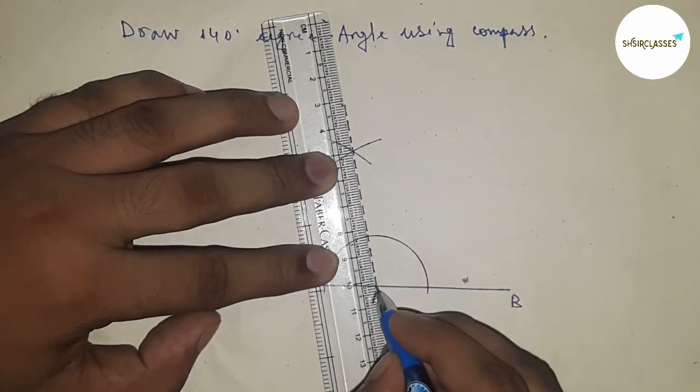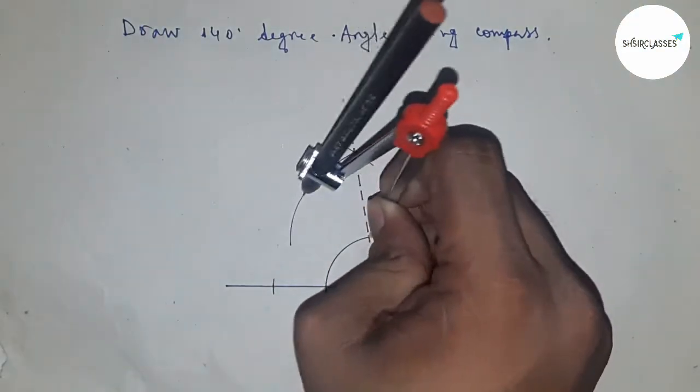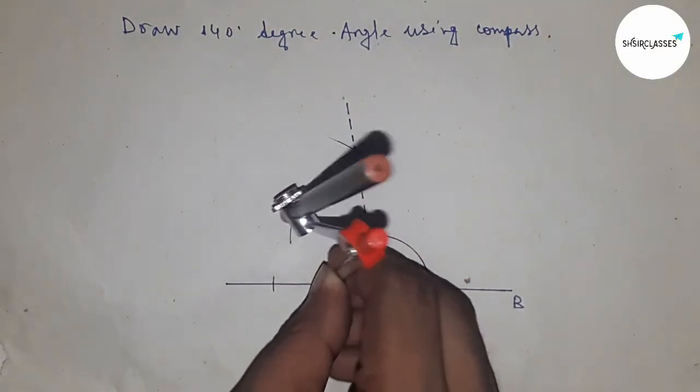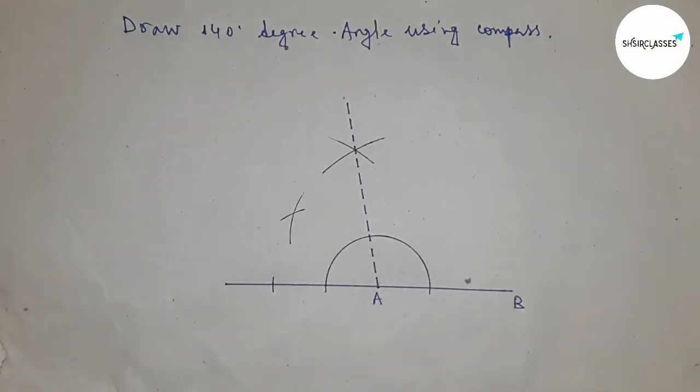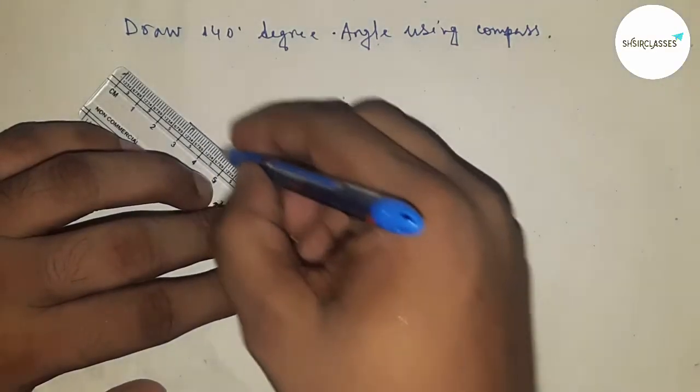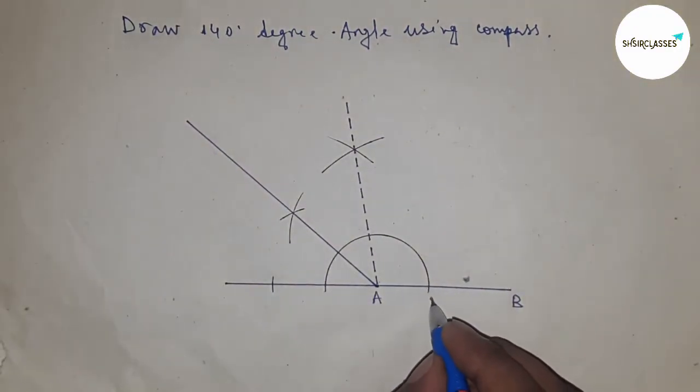Next, bisecting this angle. So taking any length and drawing an arc, and putting the compass here and cut the arc by this way. Next, joining A and this.